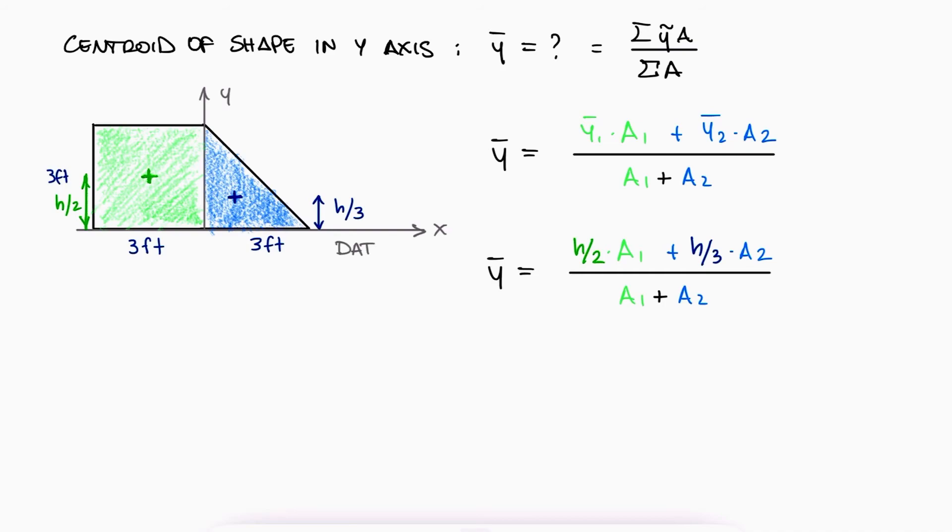Of course, the datum or plane of reference has to be the same for all shapes, and the values we obtain for y bar in this case, or x bar in the case where we are looking for the centroid along the x axis, will be the distances from that point of reference. Substituting the values, including the values for the areas, we find the overall centroid of that more complex shape.